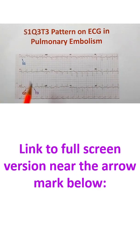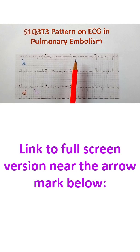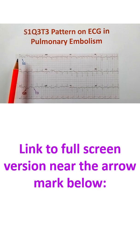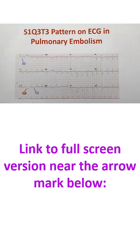So S1Q3T3 is not the commonest pattern in pulmonary embolism. There could also be an incomplete RBBB pattern — an RSR pattern in V1 — which can occur in pulmonary embolism. Similarly, right axis deviation can also occur. Here there is rightward axis, though not typical right axis deviation, but a deep S wave in lead 1 can indicate right axis deviation. These are the ECG features of acute pulmonary embolism.